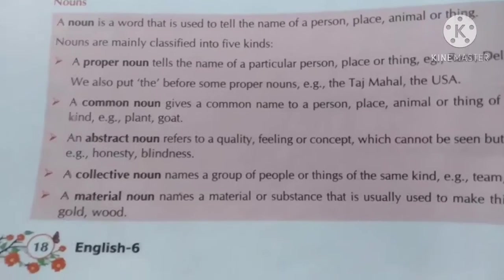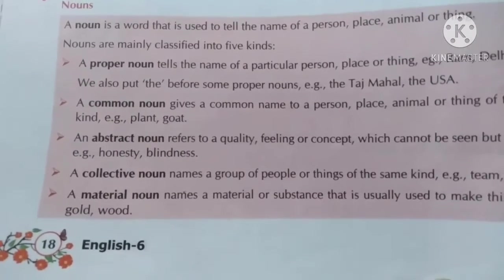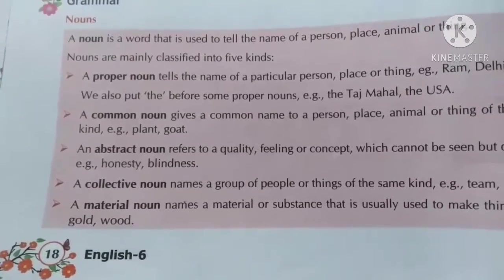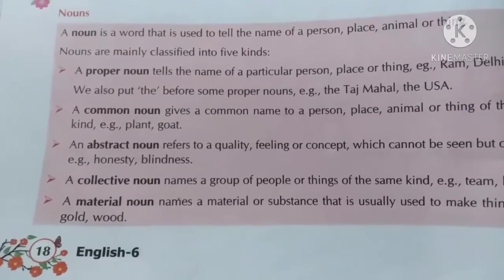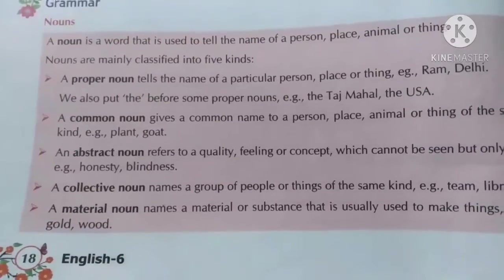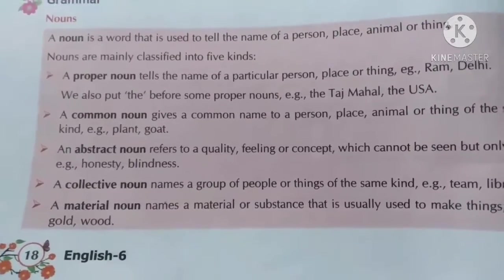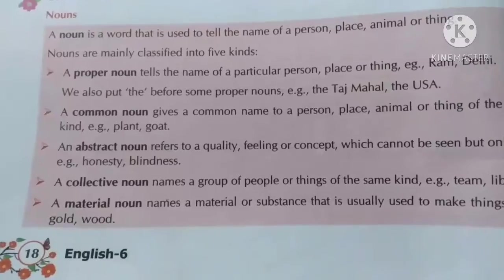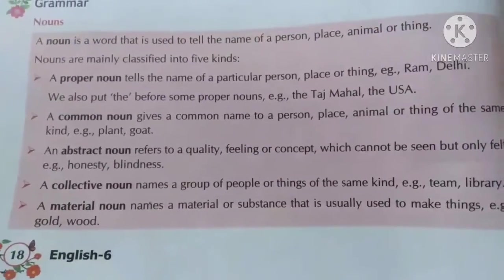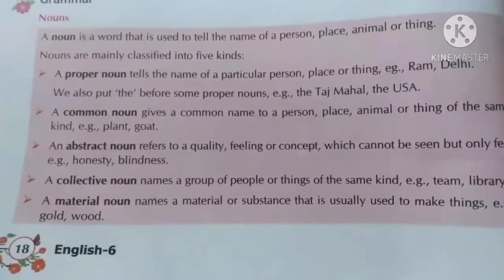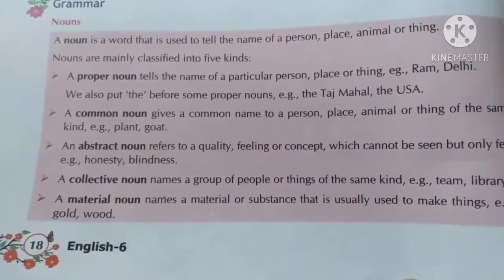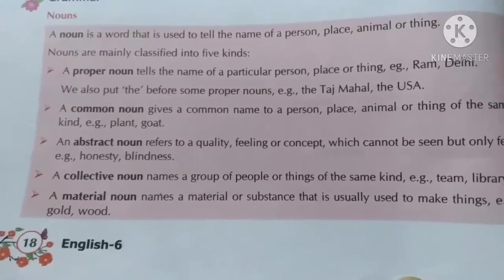Uske baad hai collective noun. It names a group of people or group of things jo same ho. Unko ek group ke andar daal sakte hain, toh usko collective noun bola jata hai. Jaise for example, 'team' — jo koi bhi khel khailta ho, us team ke jo bhi members hain, woh ek hi group ke andar aate hain. Toh usko team bola jata hai.